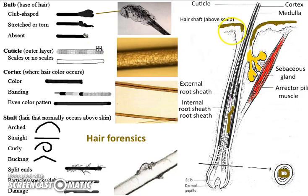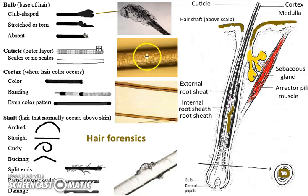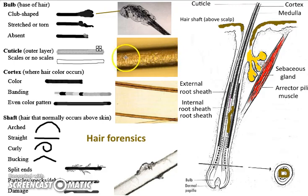I mentioned the cuticle. When a hair is healthy, it's going to be very smooth and flat. But when someone uses lots of chemicals — let's say for hair dyeing or hair treatment — it's going to lift those cuticles and you can see the scaly appearance. This suggests someone who uses a lot of product on their hair, so that's a category.